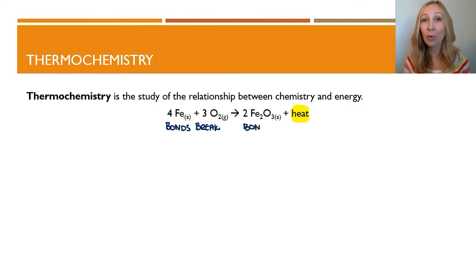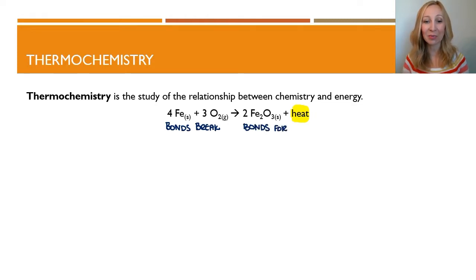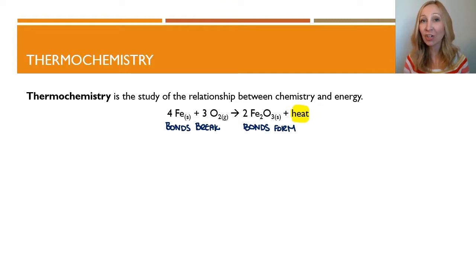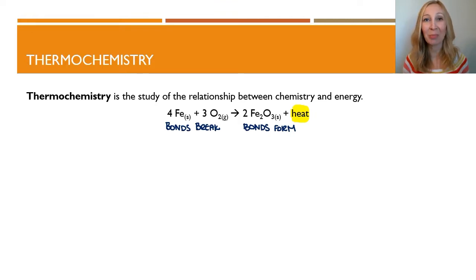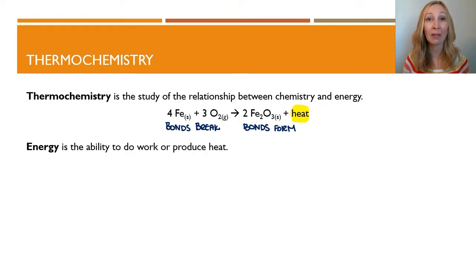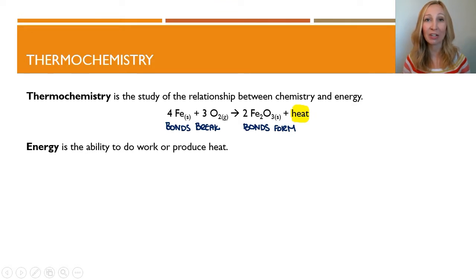Heat is on the right-hand side of the arrow — we're producing heat in this reaction. Bonds are forming, releasing more energy than what it took to break those bonds initially. Now, if it took more energy to break those bonds, we would have an endothermic reaction. Heat would be on the left; it would be a reactant. We would need to put in more heat than what we got out of the reaction.